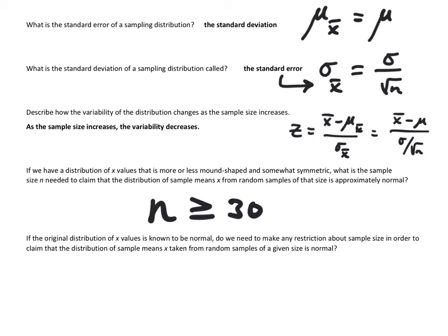If the original distribution of x values is known to be normal, do we need to make any restriction about sample size in order to claim that the distribution of sample means x̄ taken from random samples of a given size is normal? We do not. If it's known to be normal, then you do not have to worry about it.